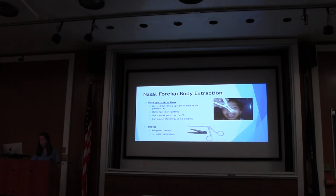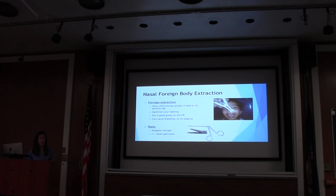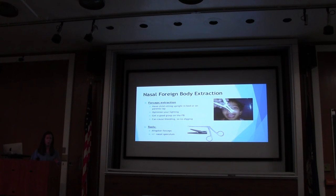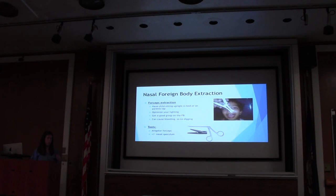Forceps extraction is pretty popular for the nose. It works well for something soft that you can grab, like a piece of paper. Have the kid comfortable — sitting in mom's lap works fine. Get really good lighting; use a headlamp or the overhead light. Be very careful once you go in — you want to grab the foreign body right away. There should be no digging, as this is a very vascular area. Once it starts bleeding it'll obscure what you need to see. If you don't have a clear aim, don't probe. You can use alligator forceps plus or minus a nasal speculum to help open things up and move tissue out of the way.